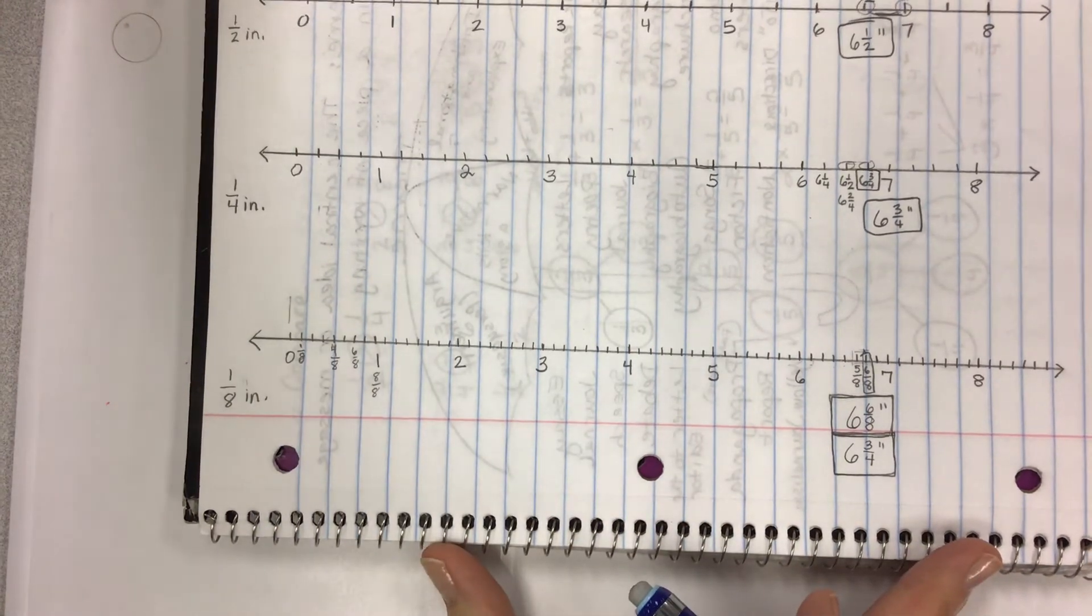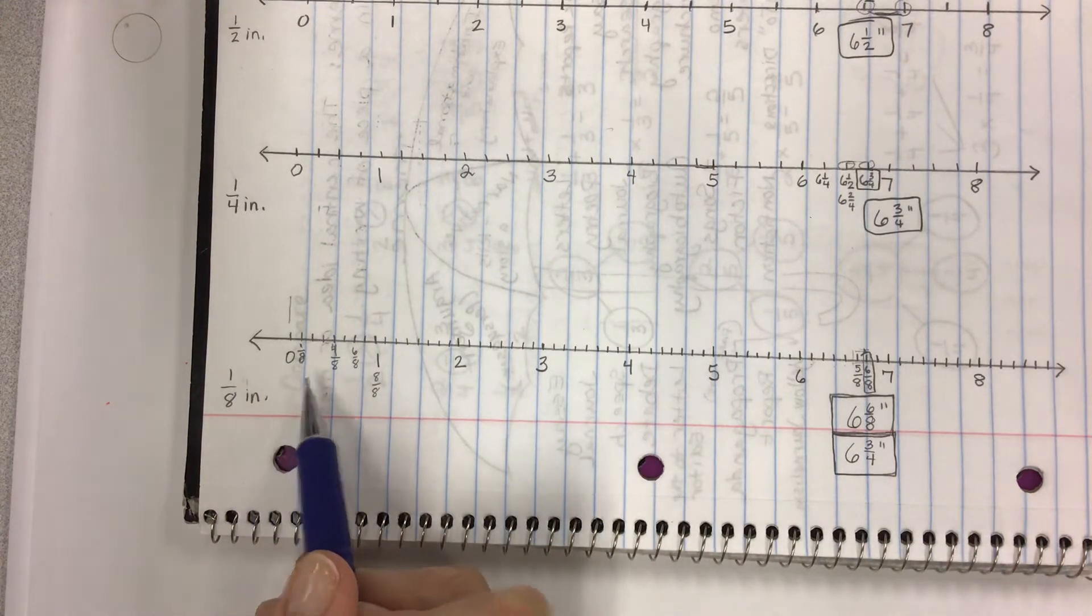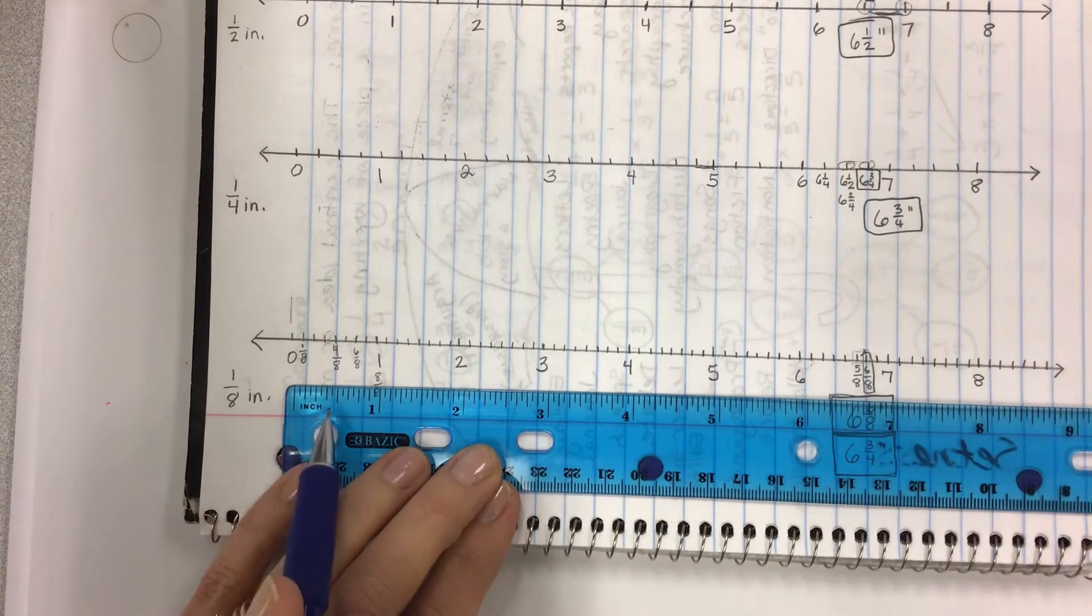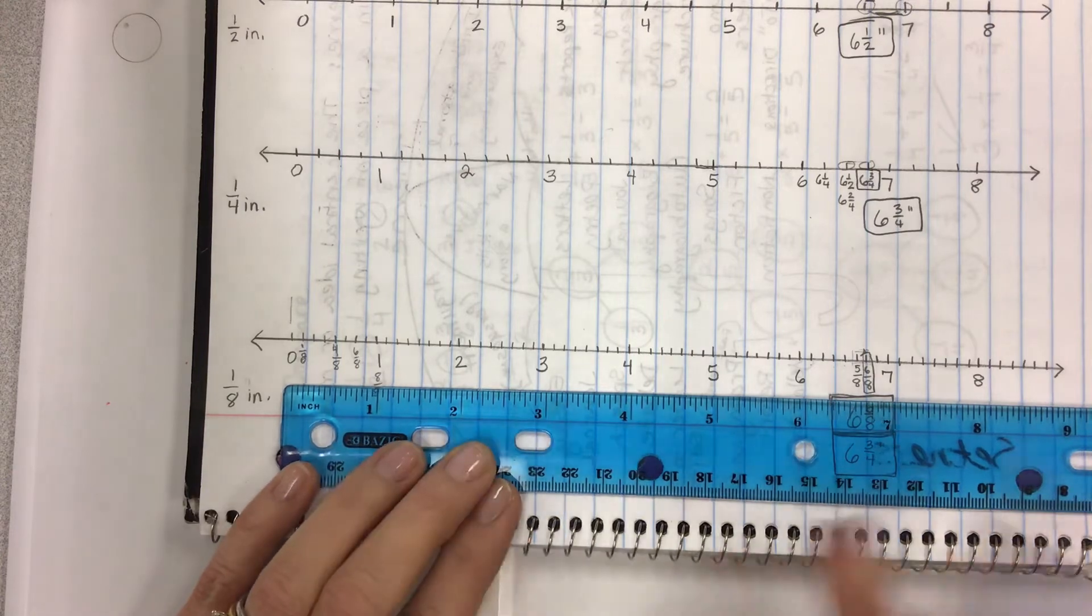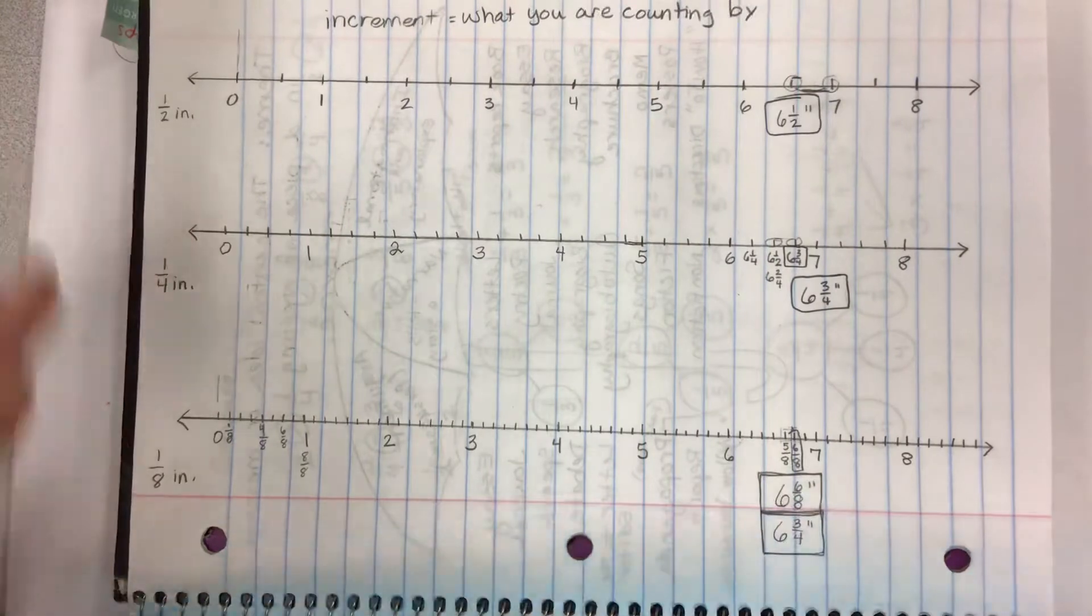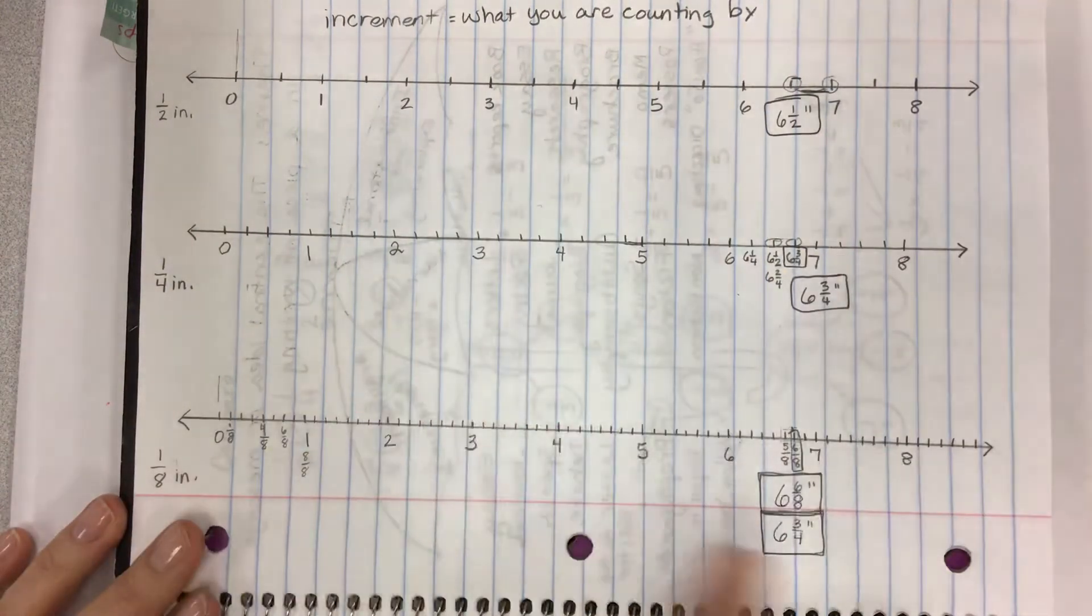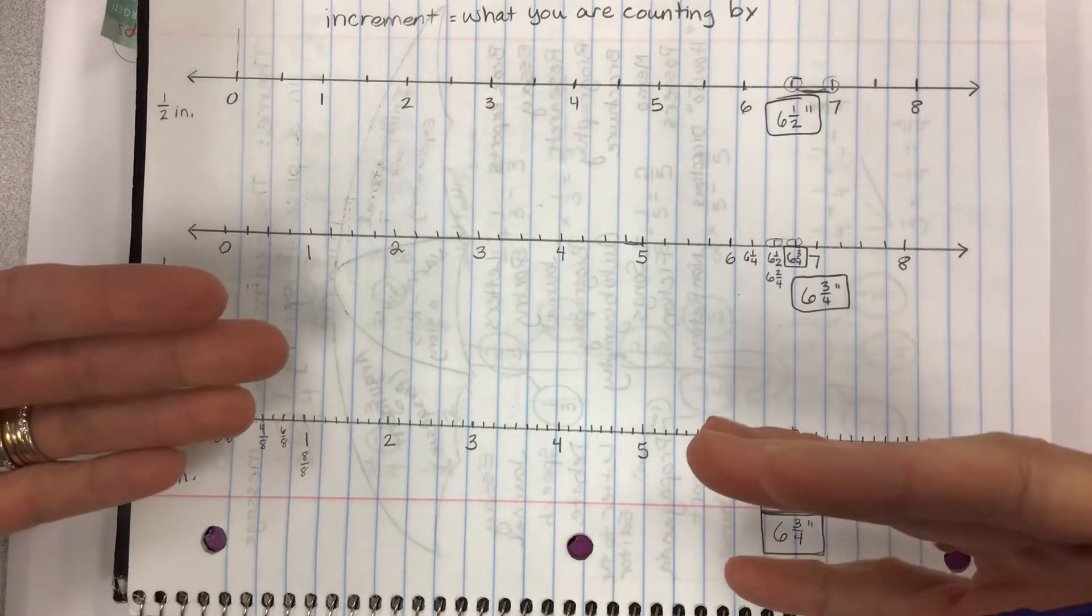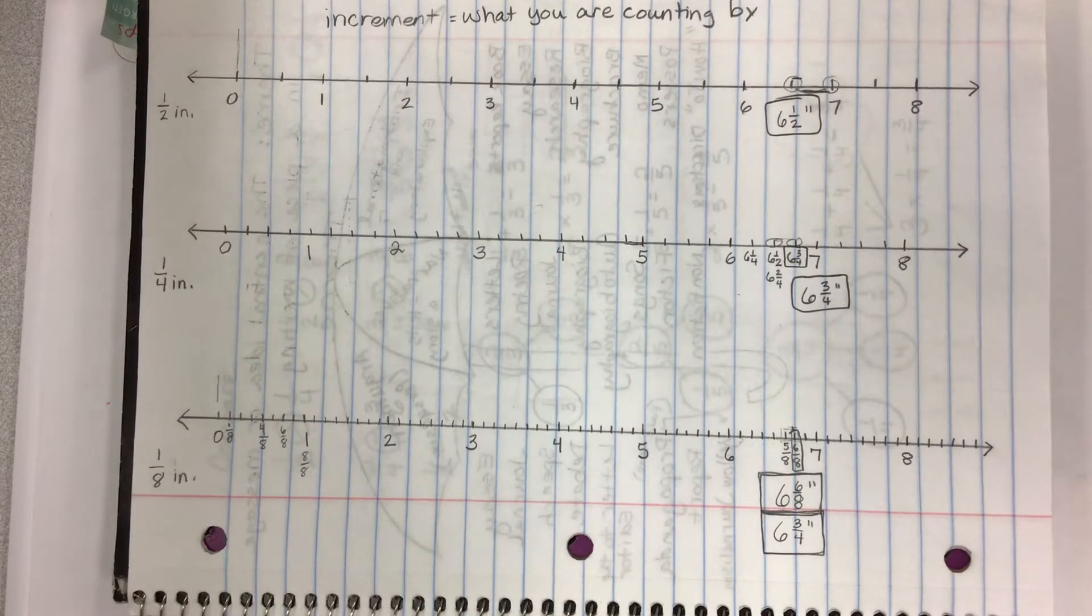The last number line that I have as a sample is marked into eighth inch increments, which means every other of these sixteenths. So skip it, mark it, skip it, mark it, skip it, mark it. And yes, we do actually take time in class to create these number lines, and it's kind of a painstaking detail day, but if you really want to understand how to narrow down your measurements, then this is what is really good practice for you.